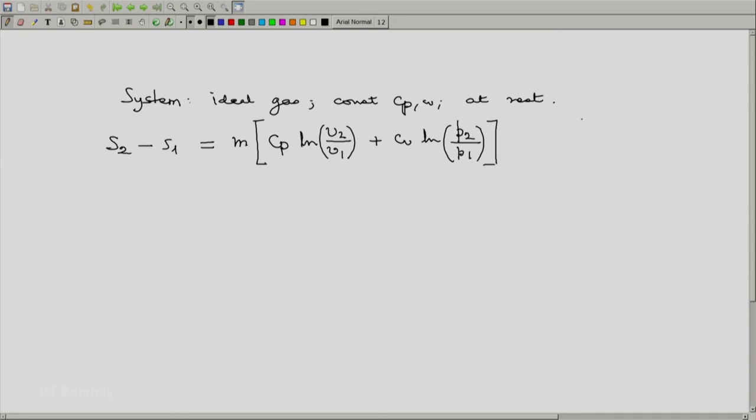Now we can use the fact that our system contains an ideal gas, hence we will have P2V2 by T2 equals P1V1 by T1. Using this, we can either eliminate the ratio of volumes in terms of ratios of pressure and temperature or the ratio of pressure in terms of volume and temperature. And if we do that, we get two alternative expressions which in some cases are more convenient. In terms of temperatures and pressures, this will be Cp logarithm of T2 by T1 minus R logarithm of P2 by P1.